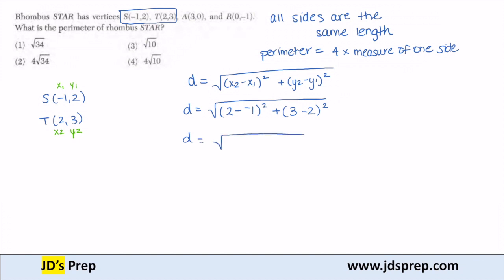When I subtract 2 minus negative 1, that's 3. And 3 minus 2 is 1, which means my distance is the square root of 9 plus 1, which is the square root of 10.